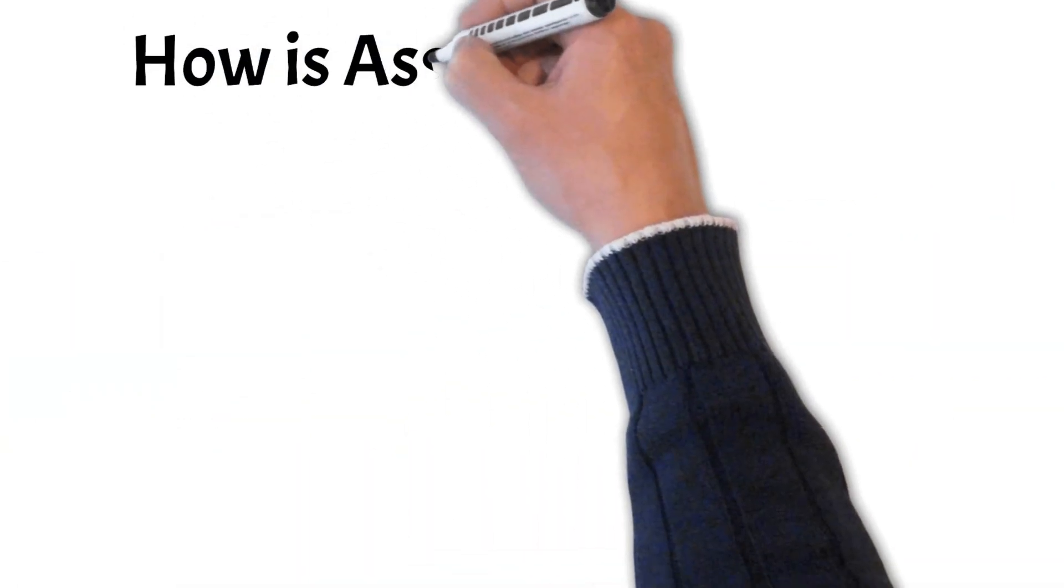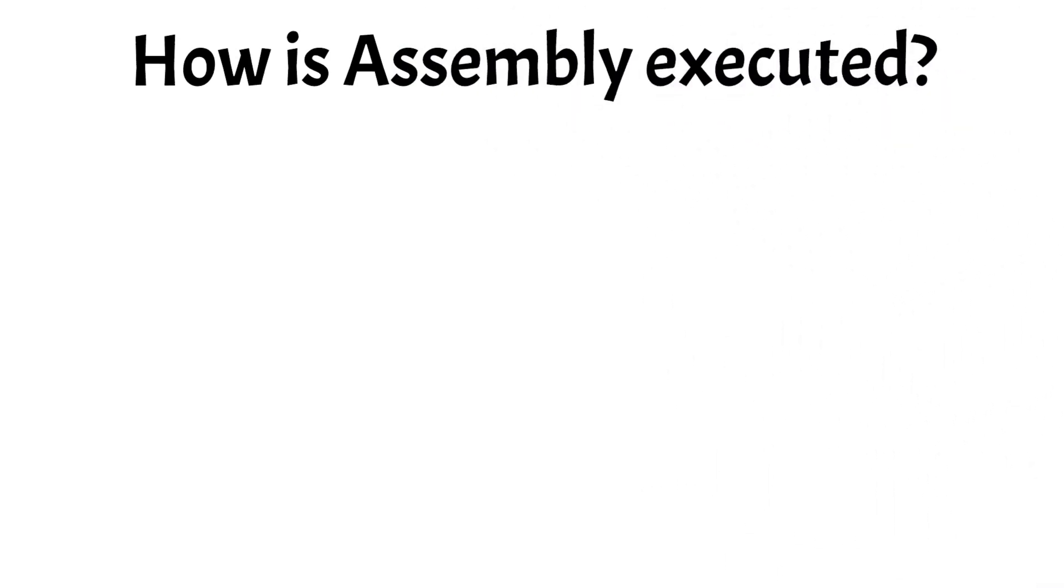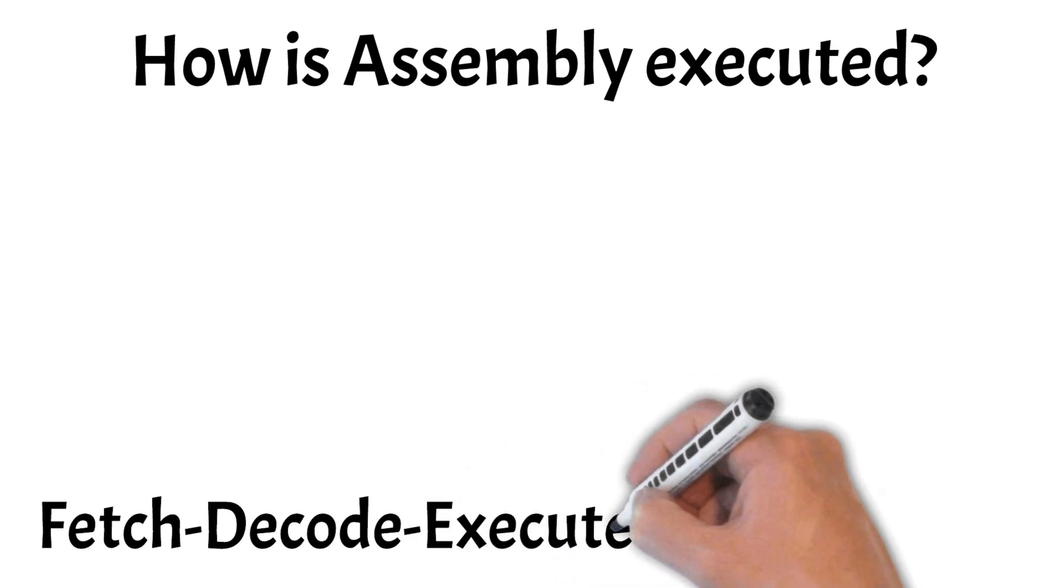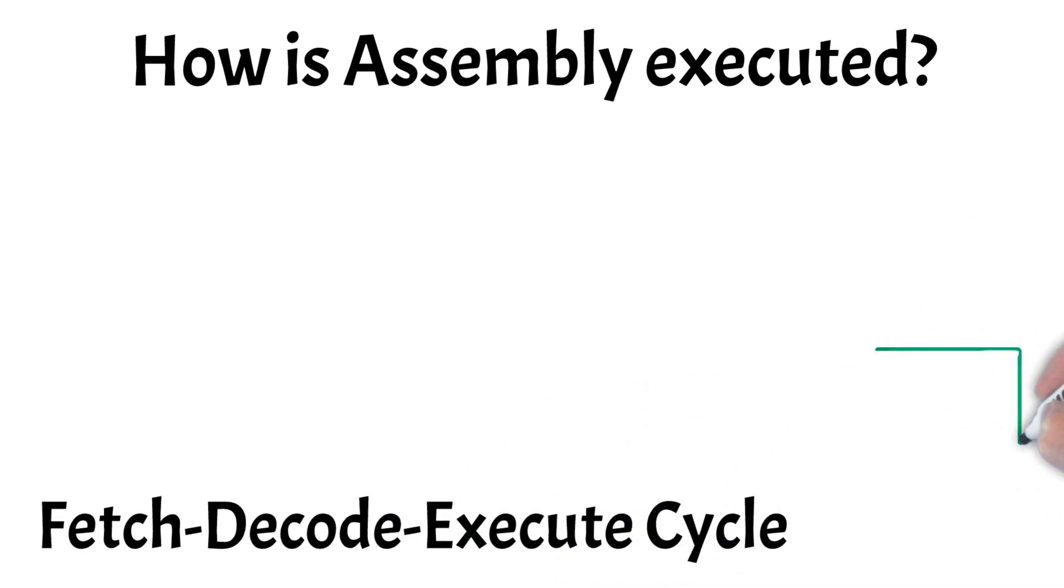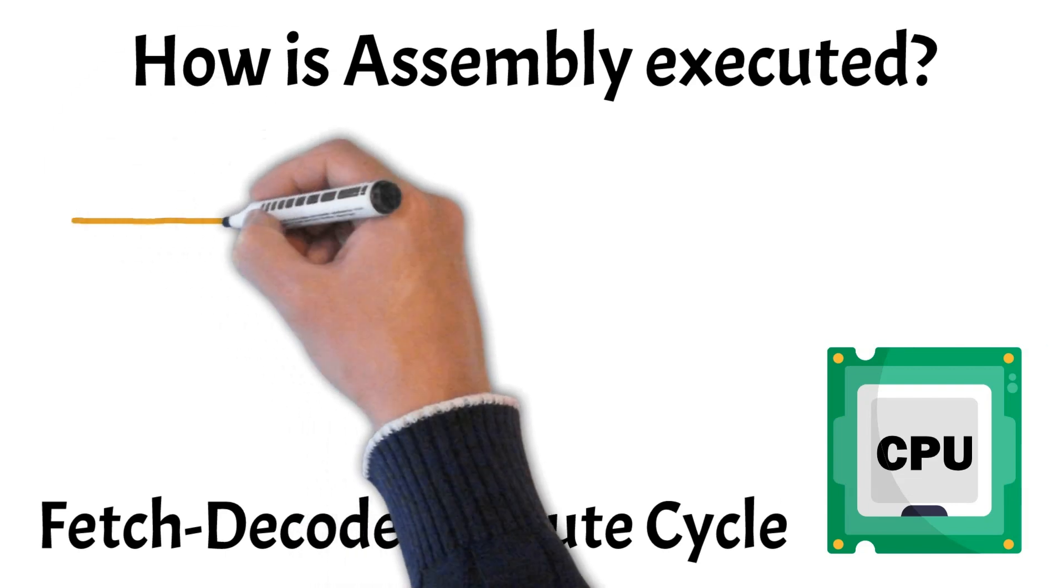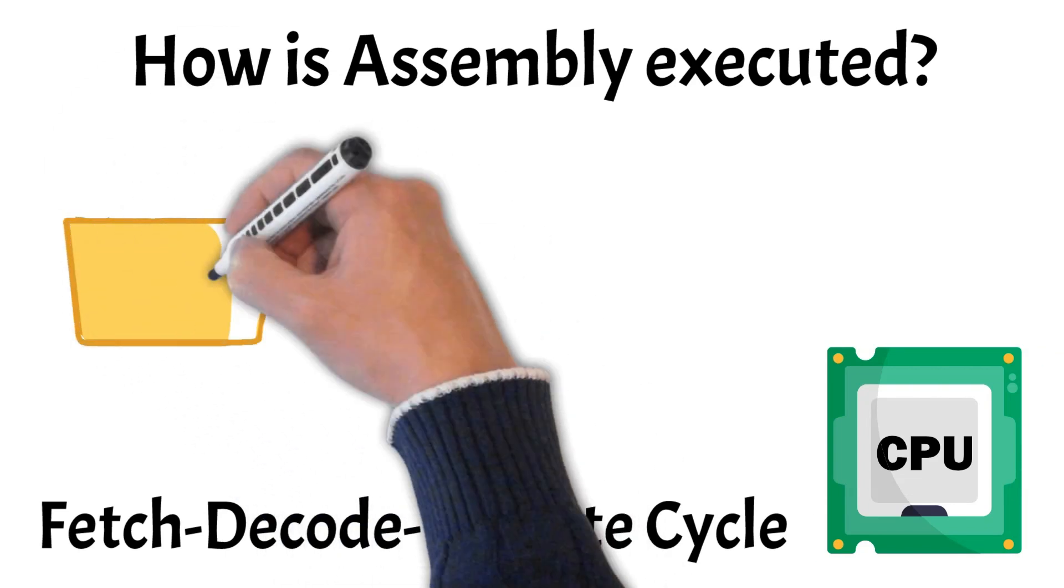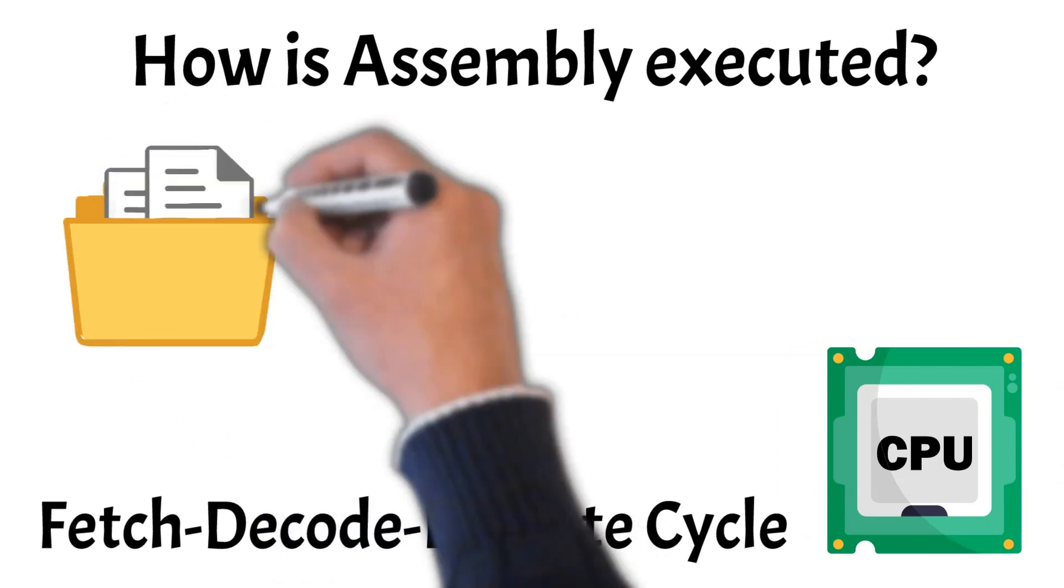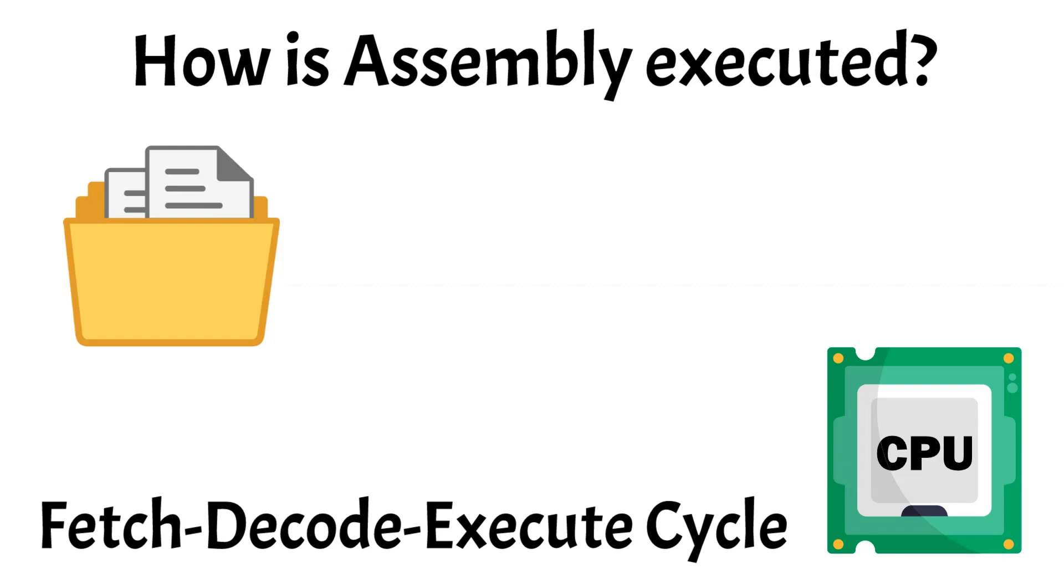Now, let's take a look at how assembly is executed. Assembly language is executed through a process known as the fetch-decode-execute cycle, which is fundamental to how a CPU operates. This cycle consists of three main stages: fetching, decoding, and executing instructions. During the fetch phase, the CPU retrieves an instruction from memory, typically pointed to by the program counter.